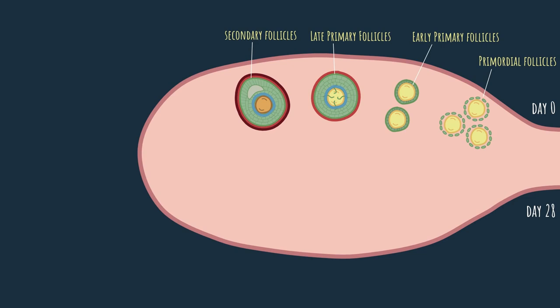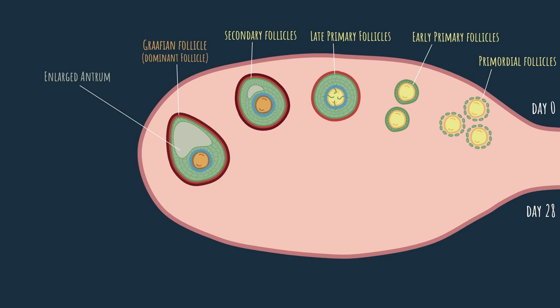Now let's get back to the follicle. The granulosa cells continue to secrete fluids, causing the antrum to grow, as we can see here. The follicle we see here is known as a Graafian follicle, and it is defined as a follicle after meiosis I and before ovulation. This is the dominant follicle. From now on we only have one follicle, or usually we only have one follicle. From the dominant follicle, the ovulated oocyte will originate.